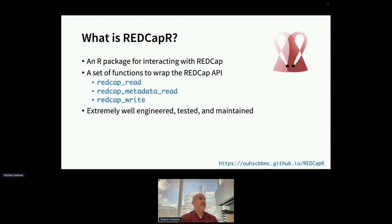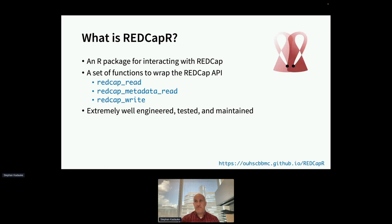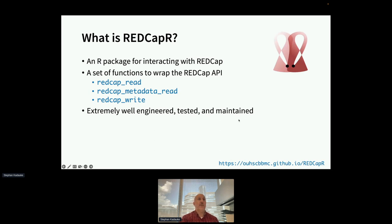REDCap R is one of the R packages for interacting with REDCap — probably the best-maintained one. The most important piece of REDCap R is a set of functions that wrap the REDCap API. REDCap comes with an API that allows you to programmatically download data using an API token. REDCap R has functions such as REDCap read, REDCap metadata read, and REDCap write. It's extremely well engineered — tons of unit tests, lots of assertions, been around for 10 years, well tested, well maintained. We love REDCap R.